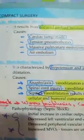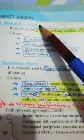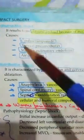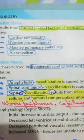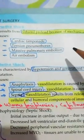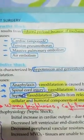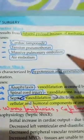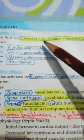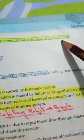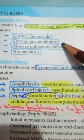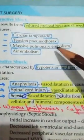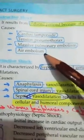The third type is obstructive shock, where there is mechanical obstruction of cardiac filling, reducing preload. The blood is not able to reach the heart properly. Causes include cardiac tamponade, tension pneumothorax, massive pulmonary embolism, and air embolism.